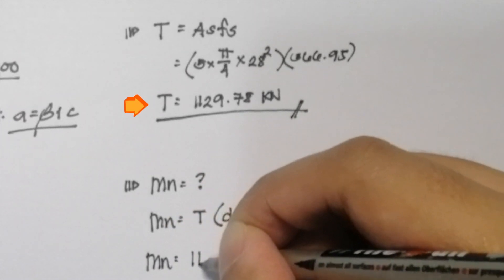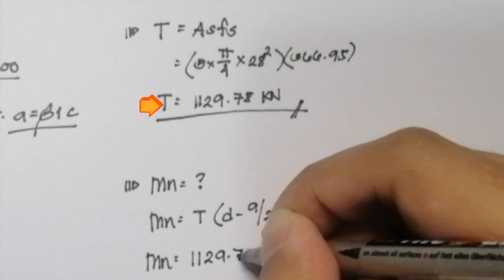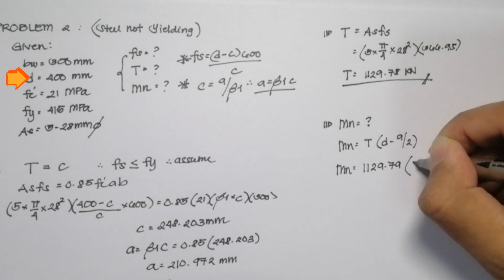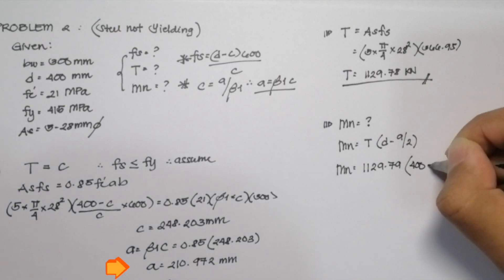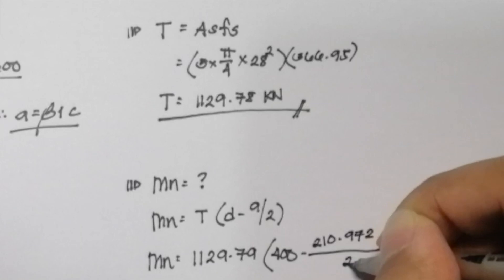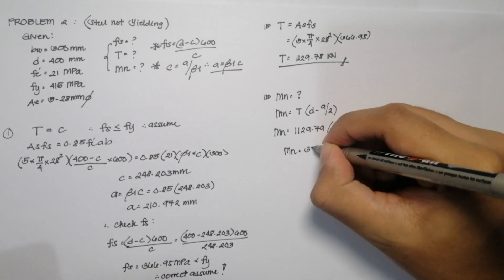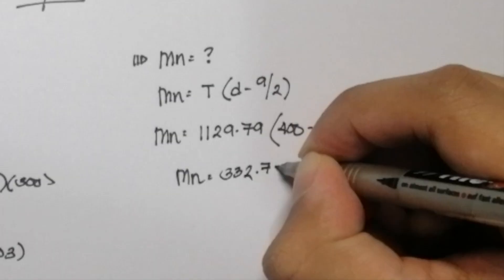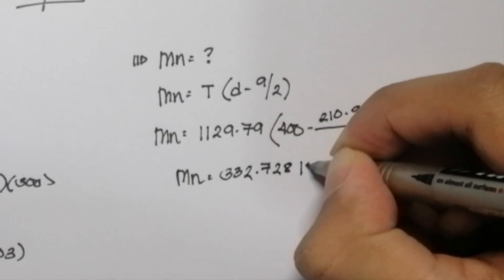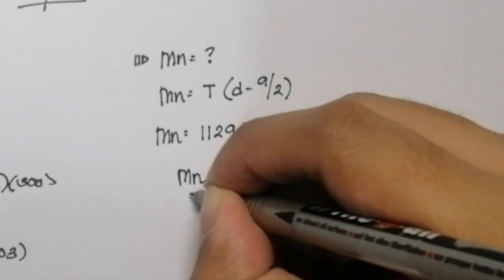So T is equal to 1,129.79 multiplied by 400 minus A, 210.972 divided by 2. So the value of our nominal moment is 332.728 kilonewton meter. And that is the answer for our third and final question.